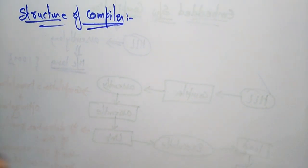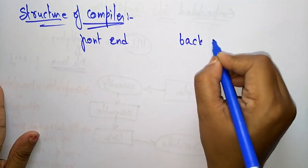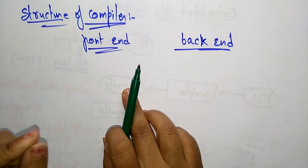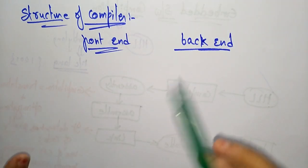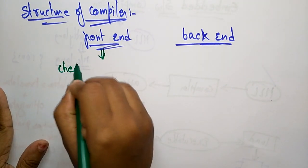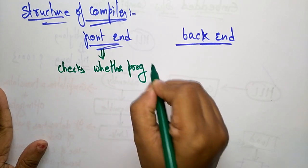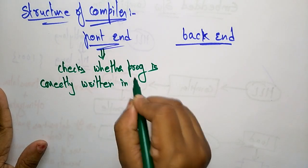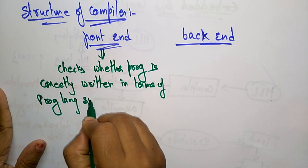A compiler has two parts: front end and back end. The front end is going to check whether the program is correctly written in terms of programming language syntax and semantics.